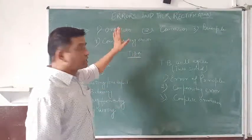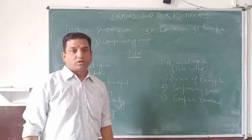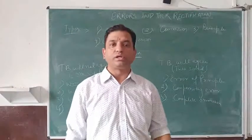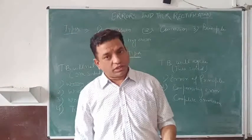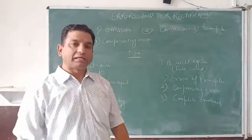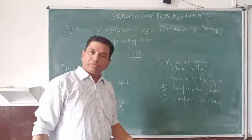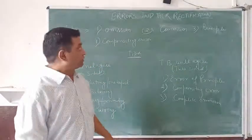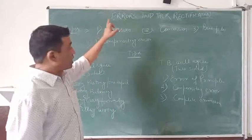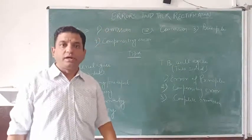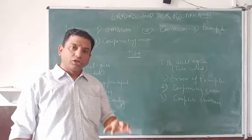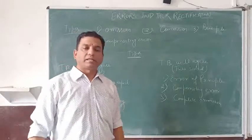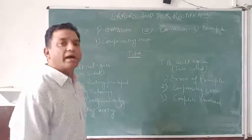First of all, what is an error? When in accountancy any function or anything is being done without following the principles, or by following the principles only partially, then it is called an error. Something which should not be done, but is committed in accountancy, is called an error.